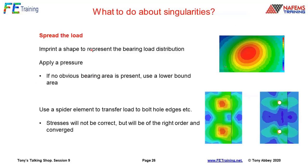What do we do about singularities? Spread the load: imprint a shape onto your CAD model surface and apply a pressure to get back to the equivalent force. Avoid applying point loads. If there's no obvious bearing area, use a lower bound area estimate. We can use a spider element to transfer load to bolt edges — applying a point load across a lap joint gives singularity stresses, but with the spider, stresses are the right order and will converge. Always acknowledge singularities rather than hiding them.